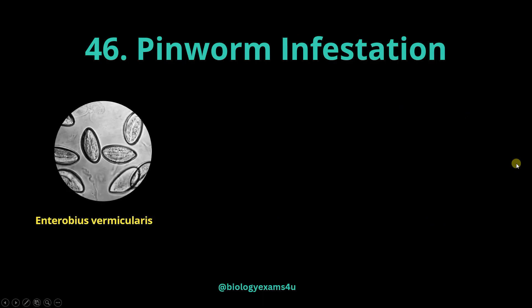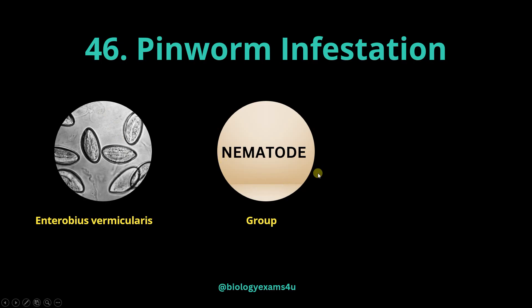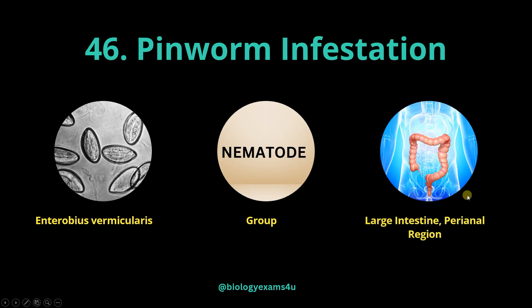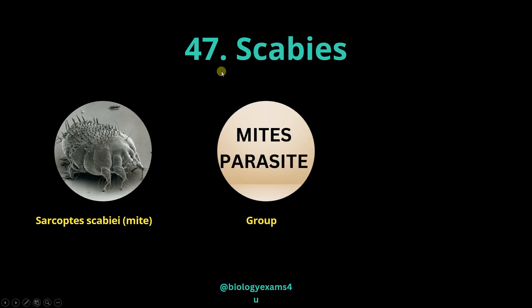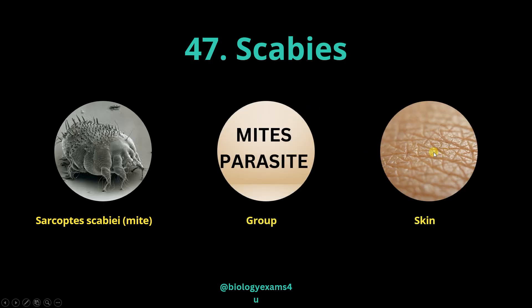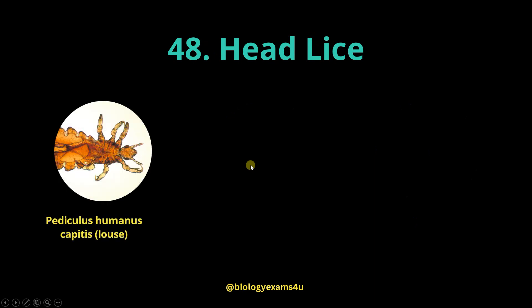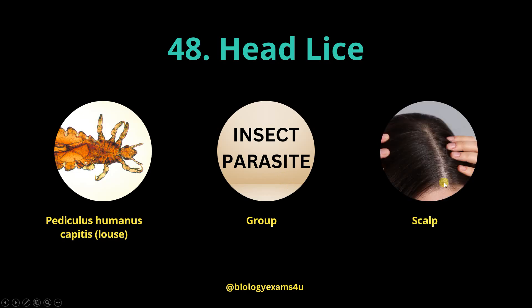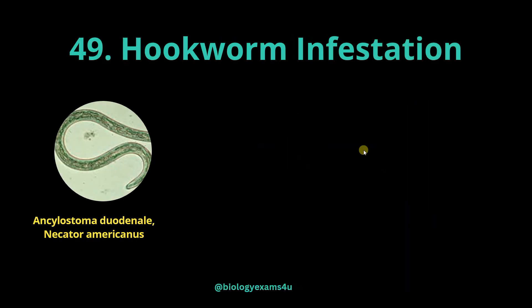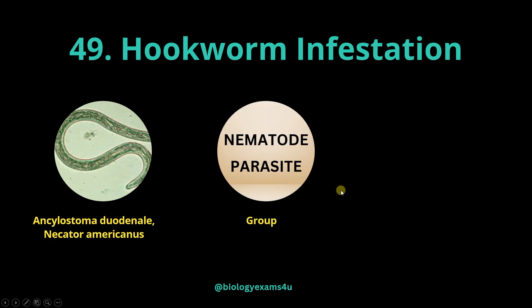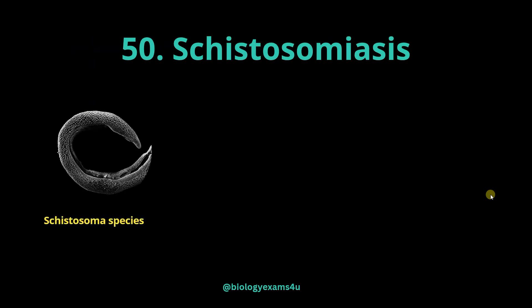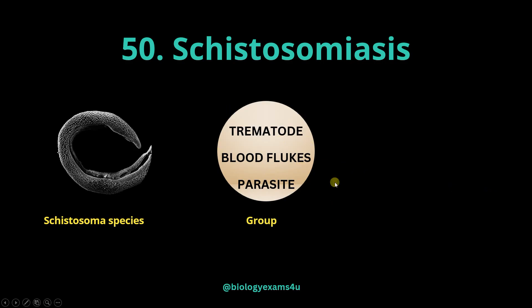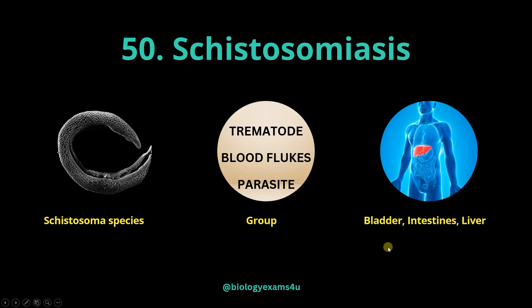Amoebiasis is caused by Entamoeba histolytica, a protozoa that infects the large intestine and liver. Pinworm is caused by Enterobius vermicularis, a nematode; the site of infection is the large intestine and perianal regions. Scabies is caused by Sarcoptes scabiei, a mite and parasite, with the site of infection being the skin. Head lice is caused by Pediculus humanus, an insect and parasite, with the site of infection being the scalp. Hookworm is caused by Ancylostoma duodenale and Necator americanus, both nematodes and parasites; the site of infection is the small intestine and also the skin. Schistosomiasis is caused by Schistosoma species, belonging to trematodes or blood flukes; the site of infection is the bladder, intestines and liver.